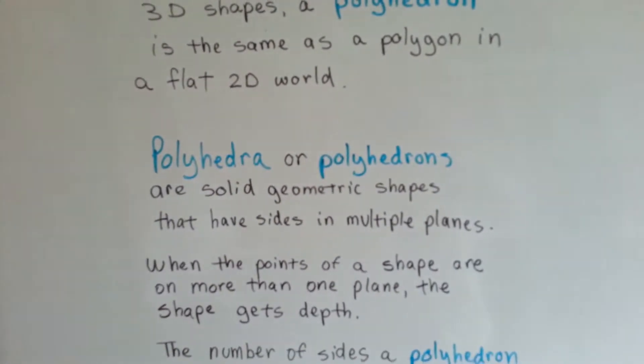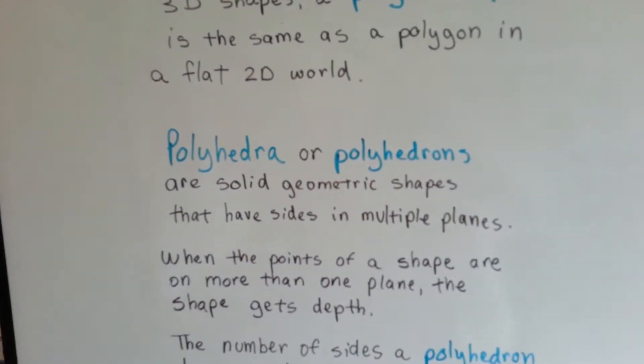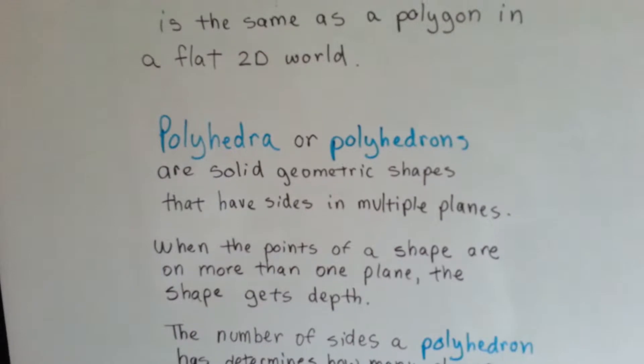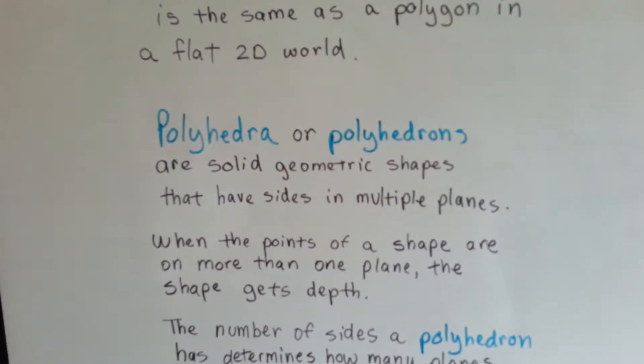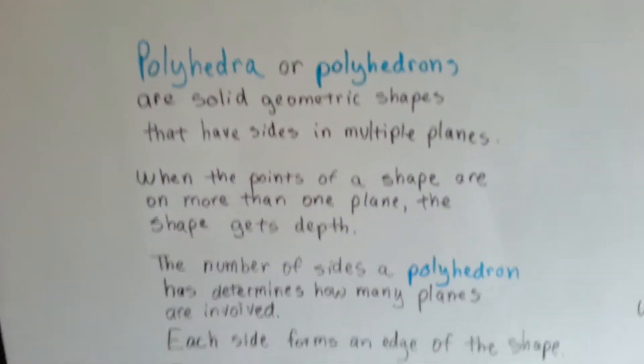They're solid geometric shapes that have sides in multiple planes. When the points of a shape are on more than one plane, the shape gets depth. It becomes 3D, right?